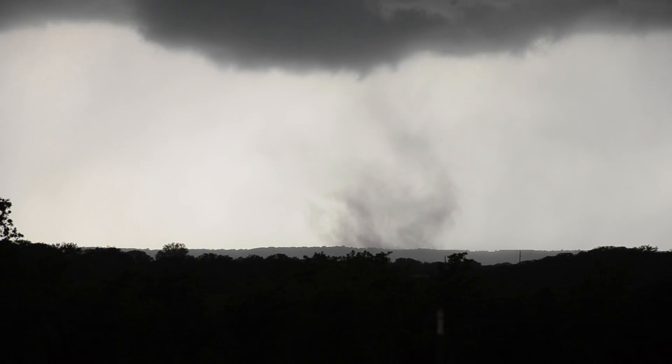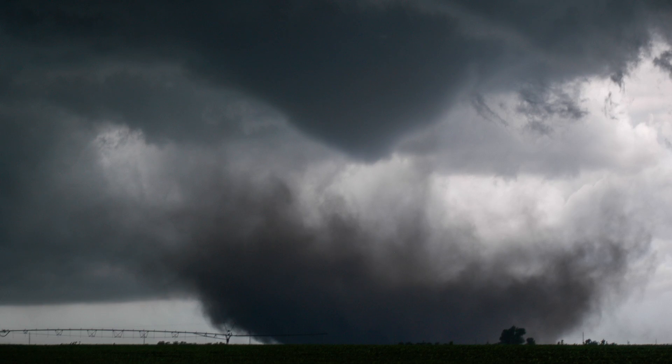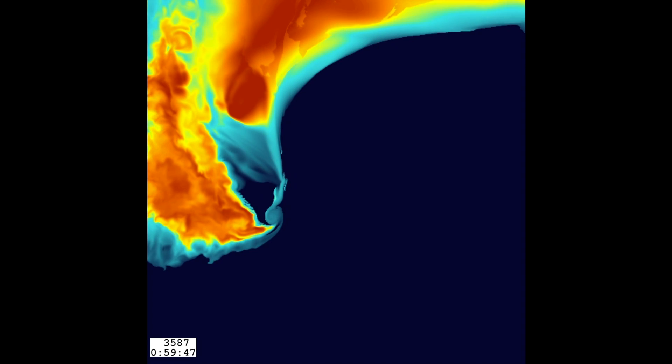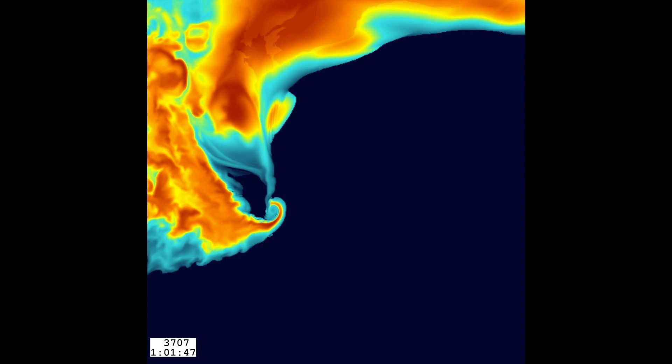And a tornado itself can be on the ground causing damage and there not be a condensation funnel. That certainly occurs in nature as well. Oh, yeah. And I can show you plenty of video of that. You know, if there wasn't any dust, you wouldn't even know there was a tornado there. Exactly. So that happens in our model sometimes. And sometimes it happens for the right reasons. And sometimes it happens because, oh, well, we got to find a way to get that rain to spiral out of the tornado.